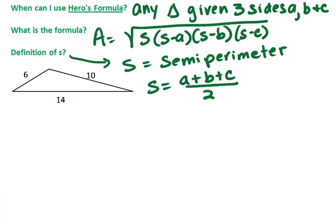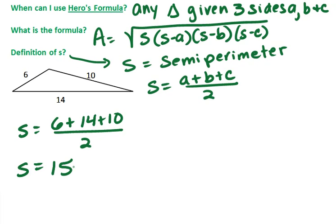So let's try Hero's formula. If you want to stop the video and try it yourself first and then restart. The semi-perimeter, I add the three sides, 30 divided by 2. So the semi-perimeter is 15.